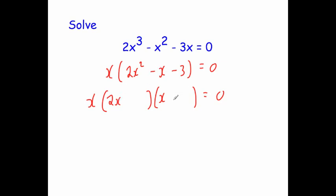Let's put our +1 here and our -3 here. Let's check it: 2x² + 2x - 3x, so that's -x - 3.